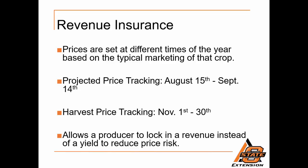It's important to remember that revenue insurance covers losses in yield and/or price. These prices are set at different times of the year based on the typical marketing of that crop — for wheat, the projected price is tracked from August 15th to September 14th, and harvest price tracking for summer sown crops runs from November 1st to November 30th. This allows a producer to lock in a revenue instead of a yield to reduce price risk. Whatever the projected price is at the time insurance is purchased, if the price falls below that price, the producer's revenue insurance guarantee will be based on the projected price. But if the price goes up after the projected price is set, the new higher price will be used. So a producer will always have the higher of the projected or the harvest price.